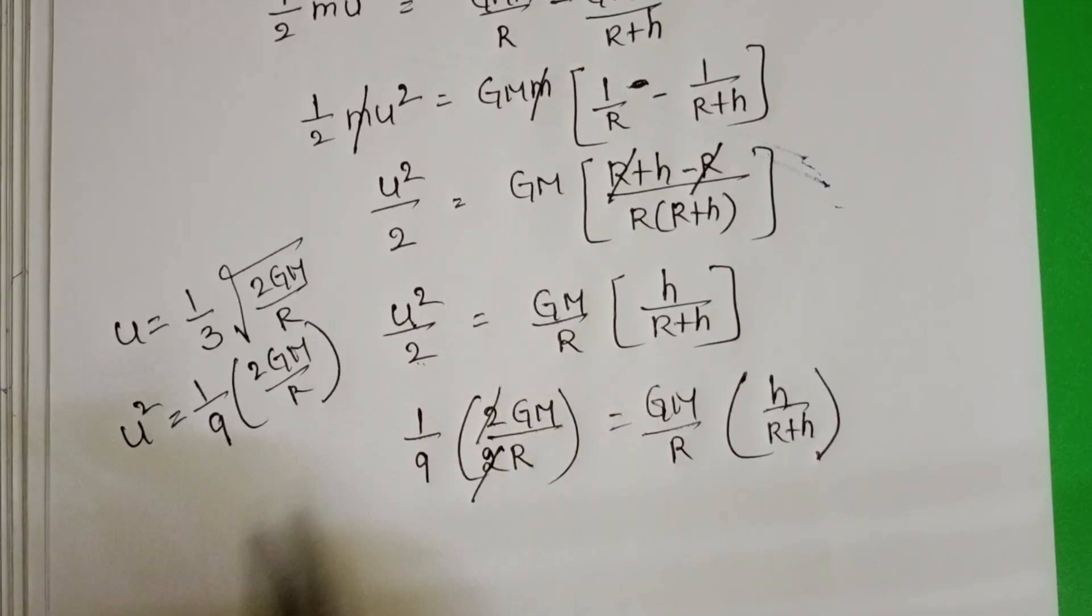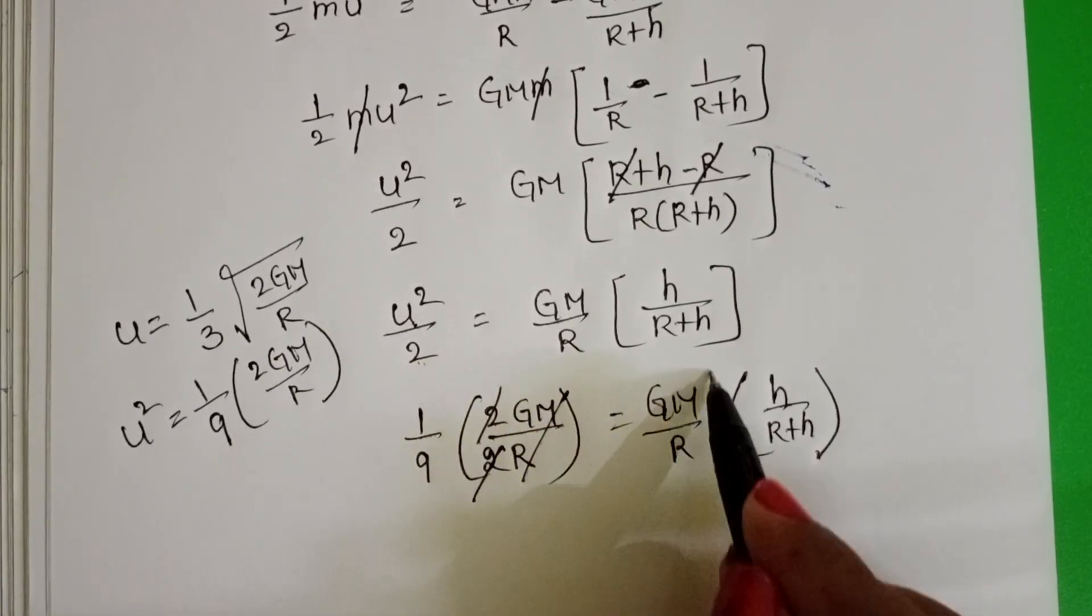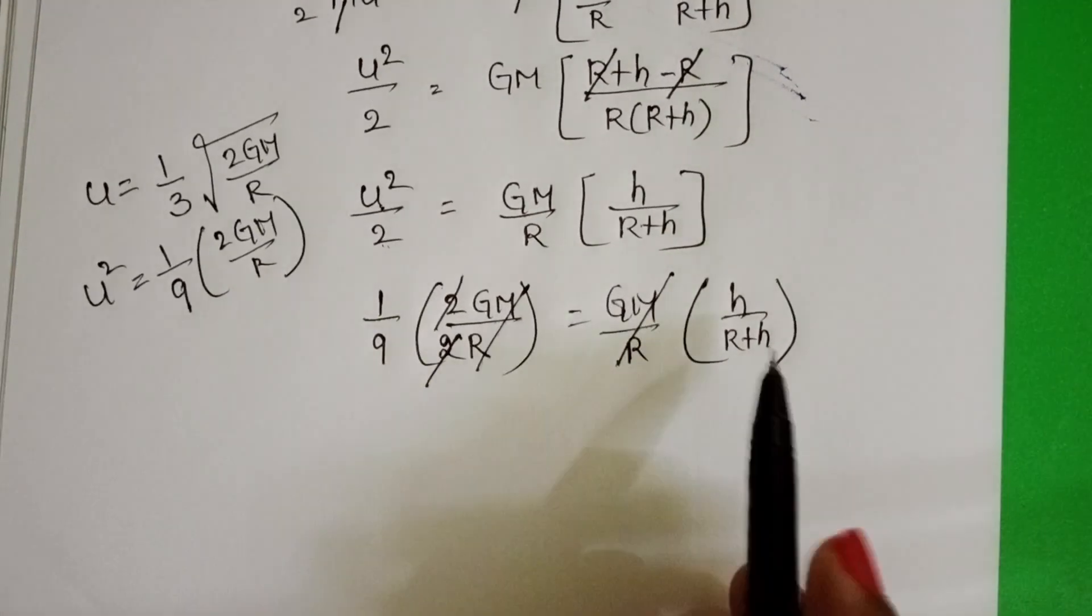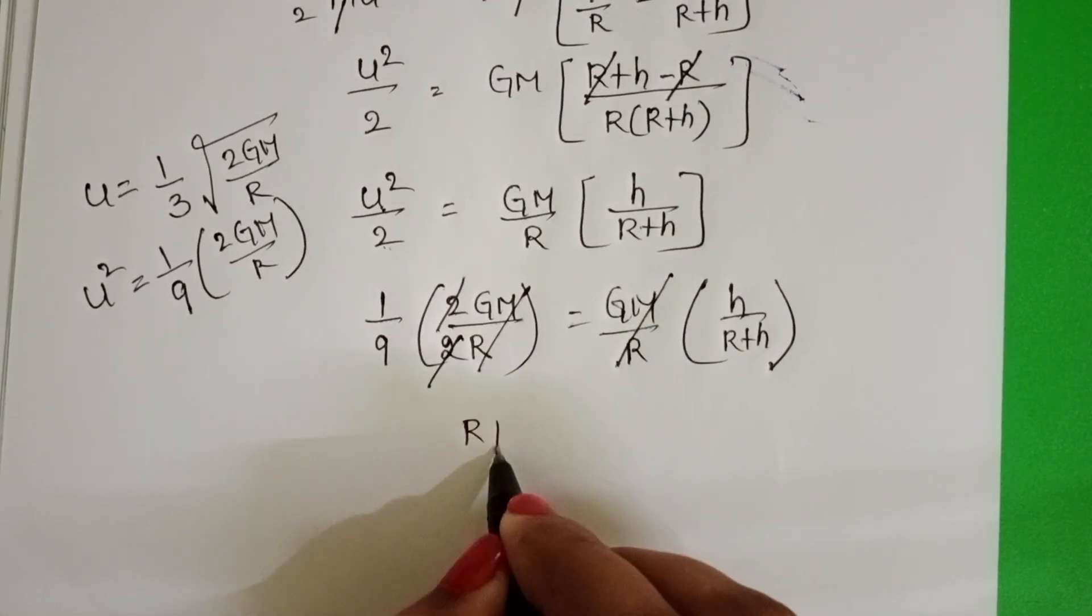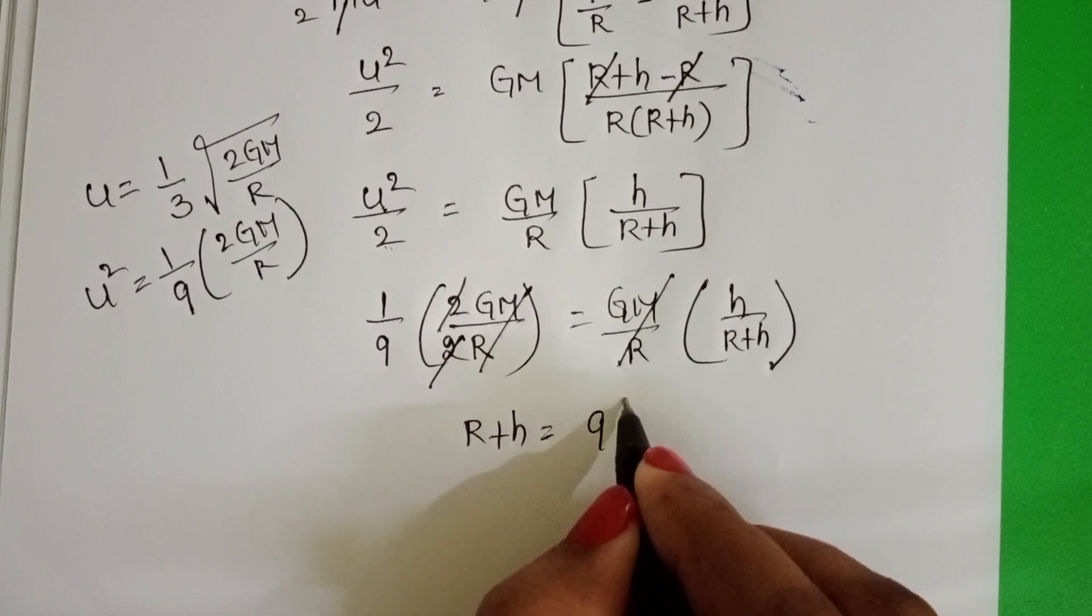2 get cancelled. GM by R on both sides get cancelled. Take cross multiplication. R plus h equals 9h.